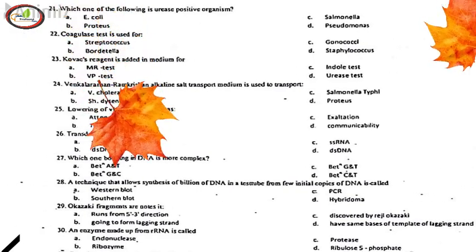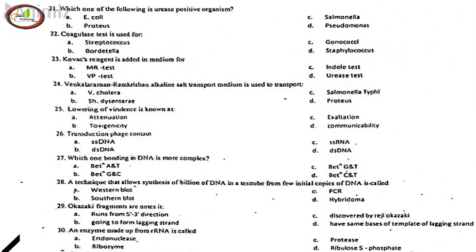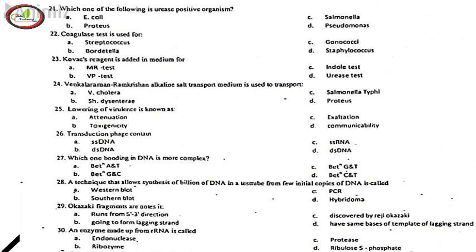21. Which one of the following is urease positive organism, V. Proteus. 22. Coagulase test is used for, D. Staphylococcus. 23. Kovacs reagent is added in medium for, C. Indole test. 24. Venkatraman-Ramakrishnan alkaline salt transport medium is used to transport, A. V. Cholera. 25. Lowering of virulence is known as, A. Attenuation. 26. Transduction phage contain, B. DS-DNA.